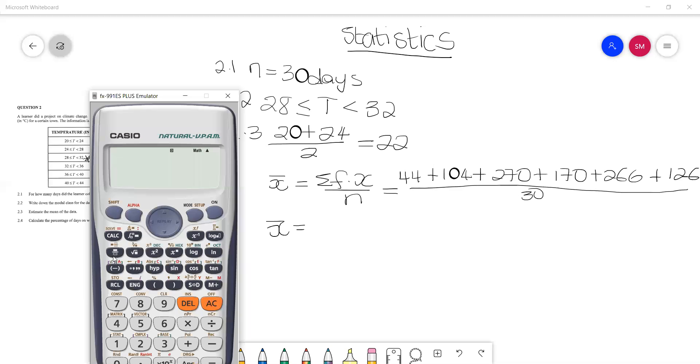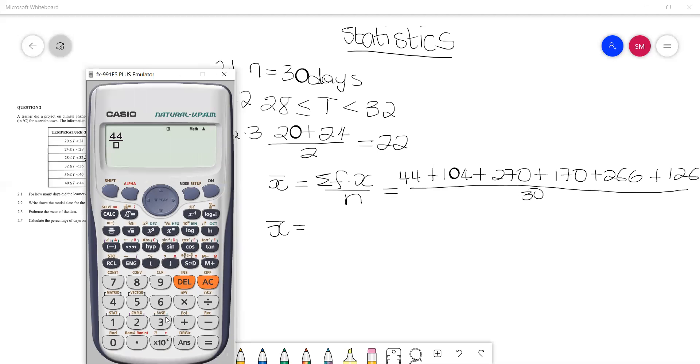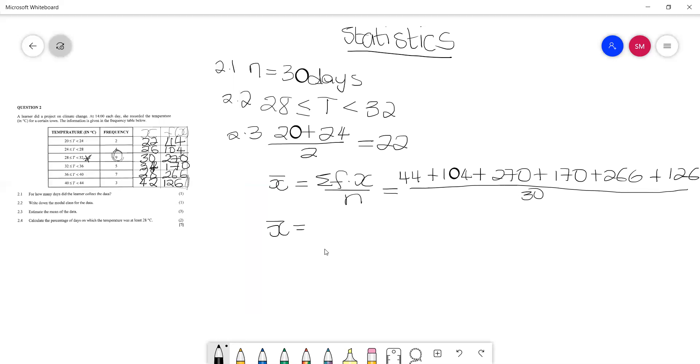We'll put in our fraction and we say 44 plus 104 plus 270 plus 170 plus 266 plus 126, all over 30. And that gives us 32.67. 32.67.